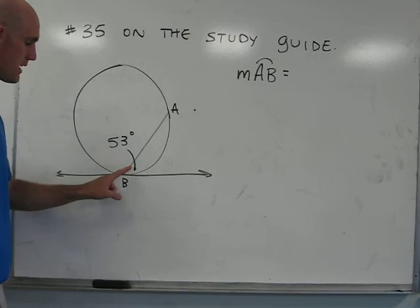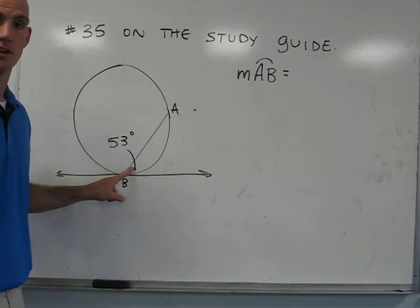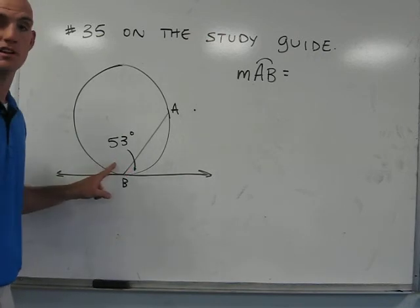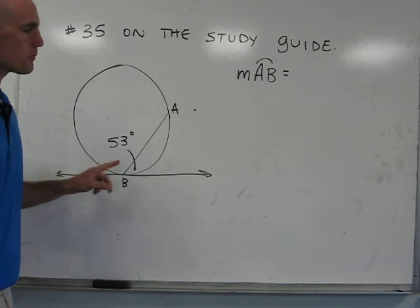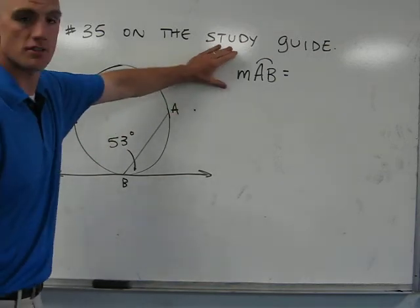Two angles are formed. One of the angles has a measure of 53 degrees. We don't know the measure of the other angle. The problem is asking us to find the measure of arc AB.